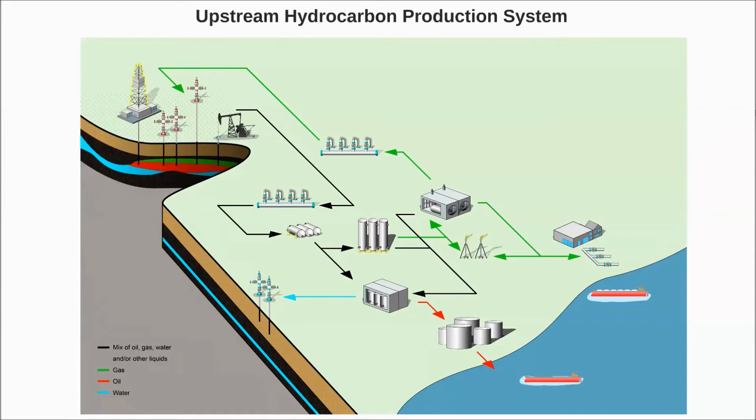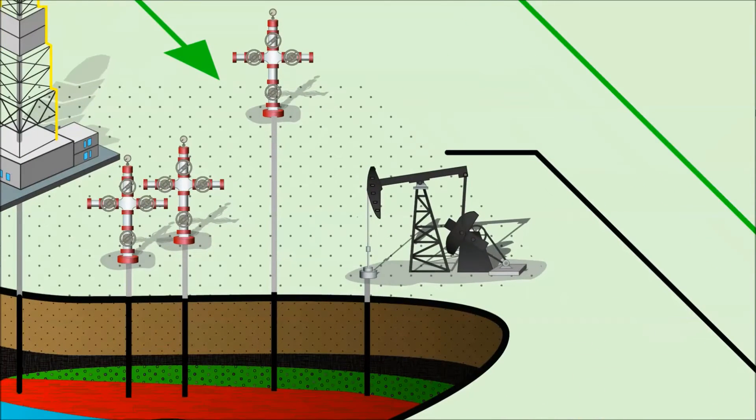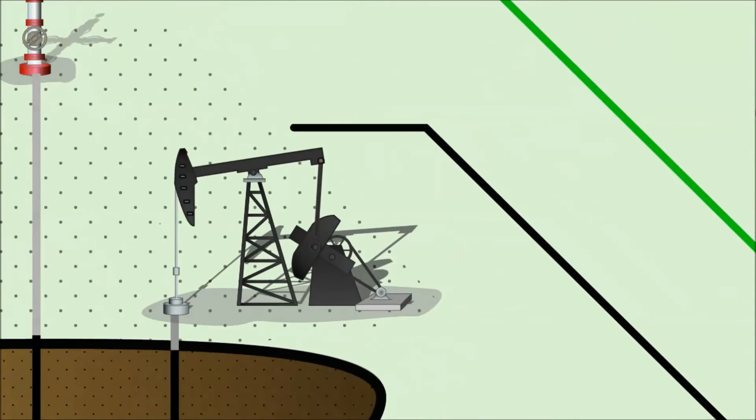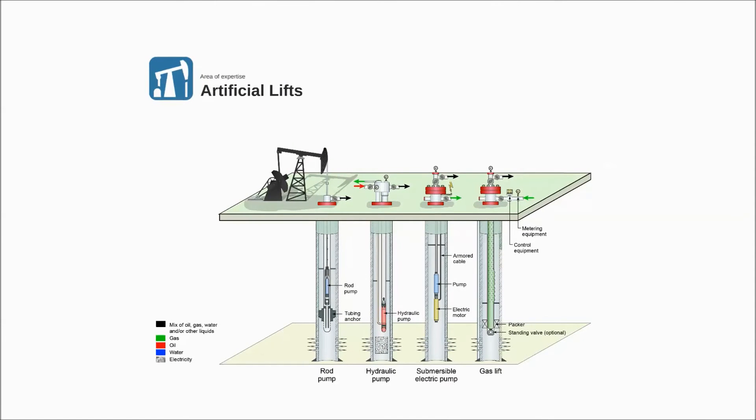Usually, the flow of the hydrocarbons from a newly developed reservoir takes place under the pressure that is present in the reservoir itself. We call this free-flowing wells. Over time, the pressure in the reservoir may drop. This means that in oil wells we have to add energy to the liquid stream to lift the liquids from the reservoir to the surface. We call this artificial lift.